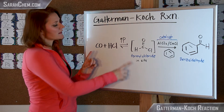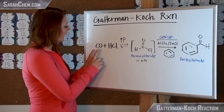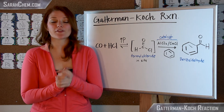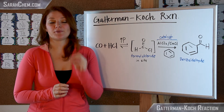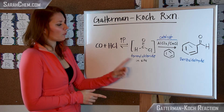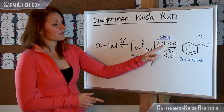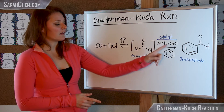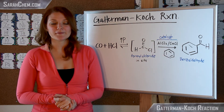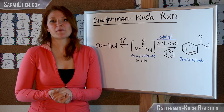In order to make formyl chloride in situ, carbon monoxide and hydrochloric acid react together under very high pressure, which allows you to make the formyl chloride. You then introduce your catalyst — AlCl3 and CuCl — along with benzene, and out comes your benzaldehyde. This is one example of how you can make benzaldehyde.